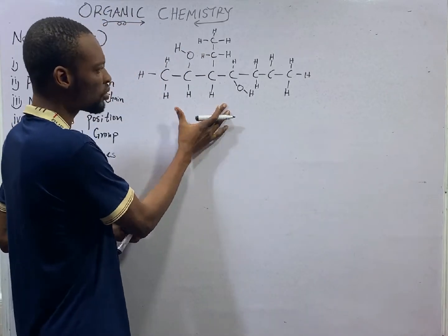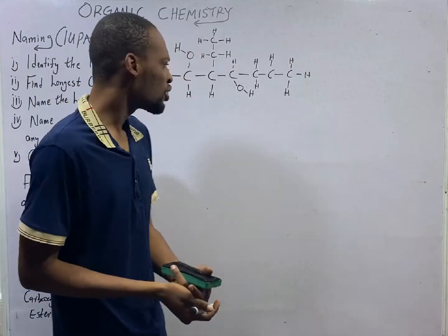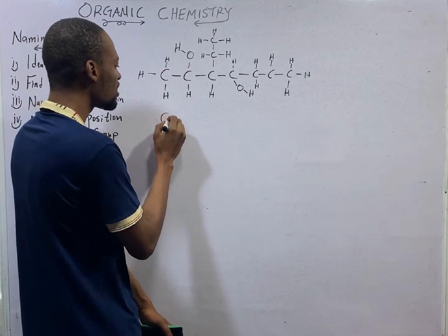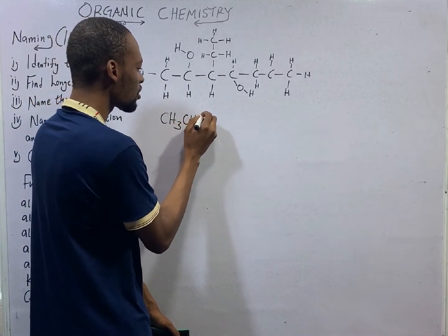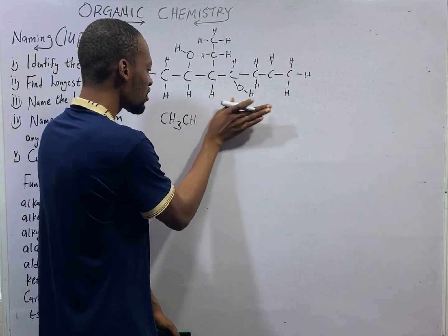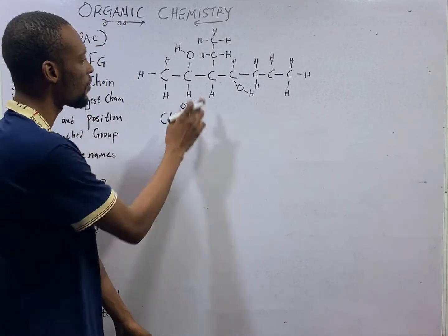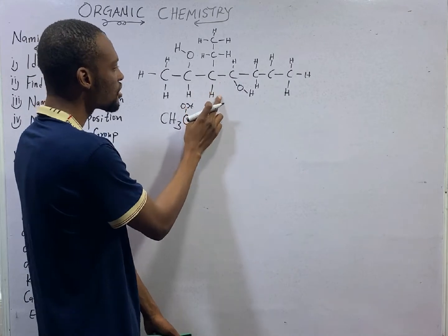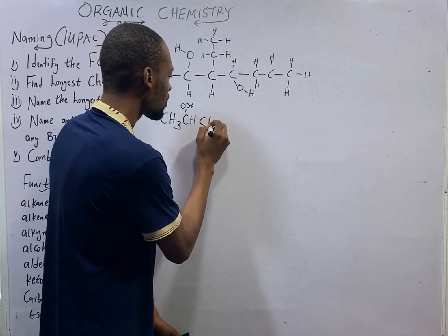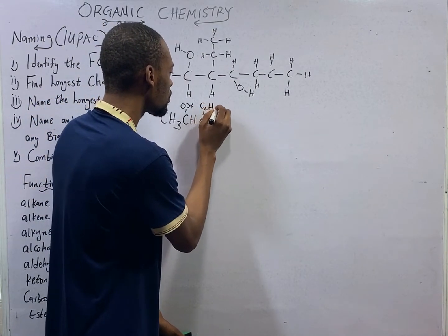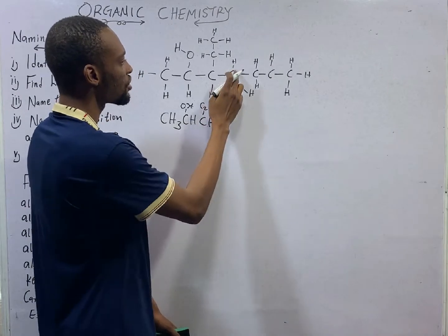Looking at this compound, it can be compressed as such or expanded. You should know that this is the same thing as CH3. This is the same thing as CH, let's say OH or COH, then move here. This is CH, then CH5, we can write this as CH, C2H5. Then we proceed.